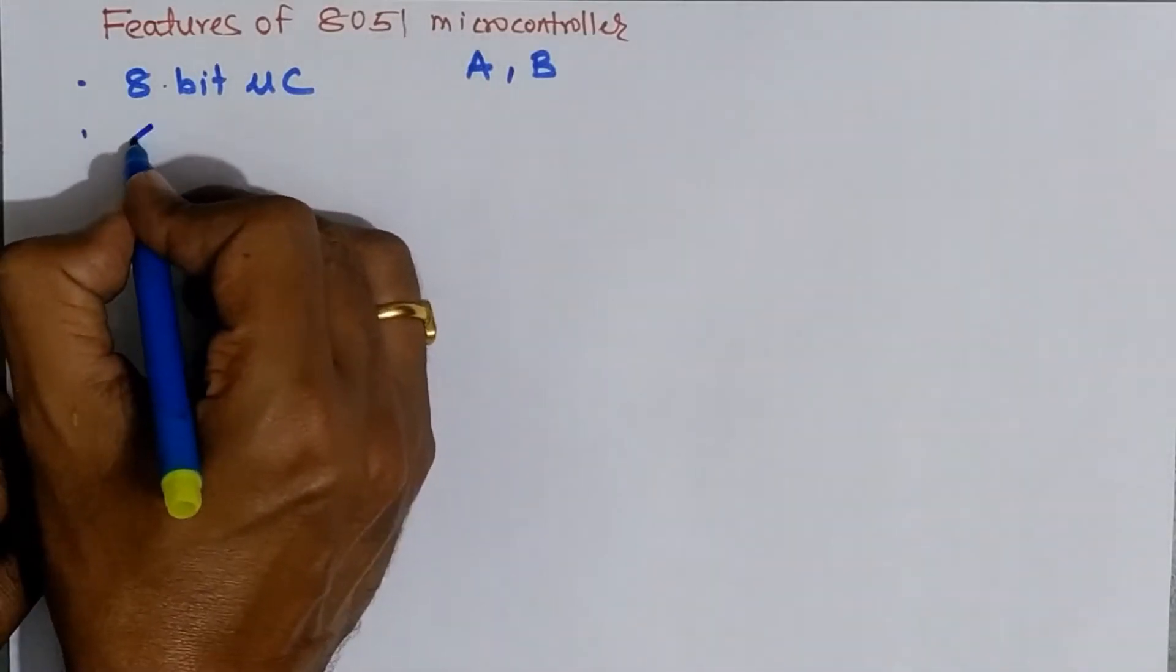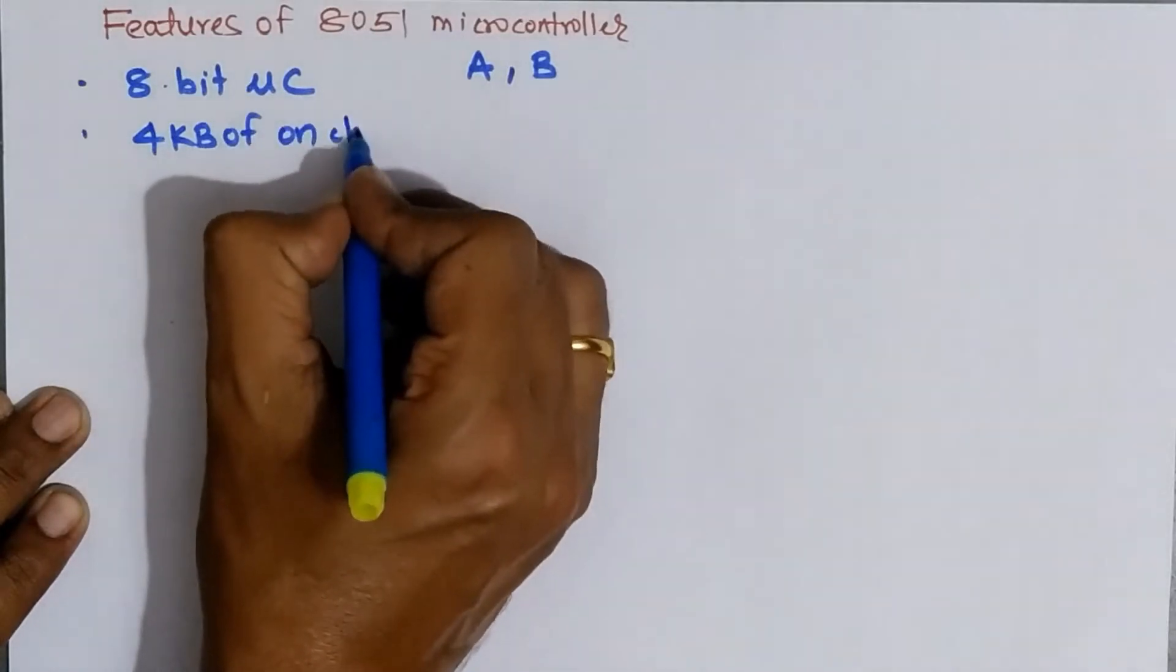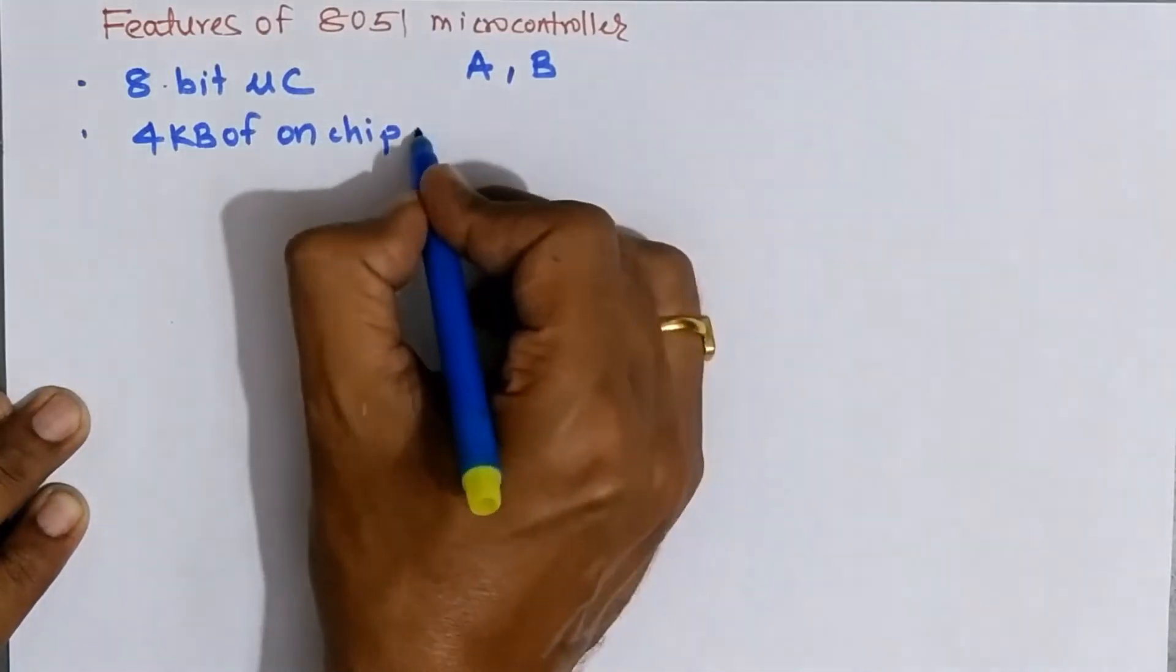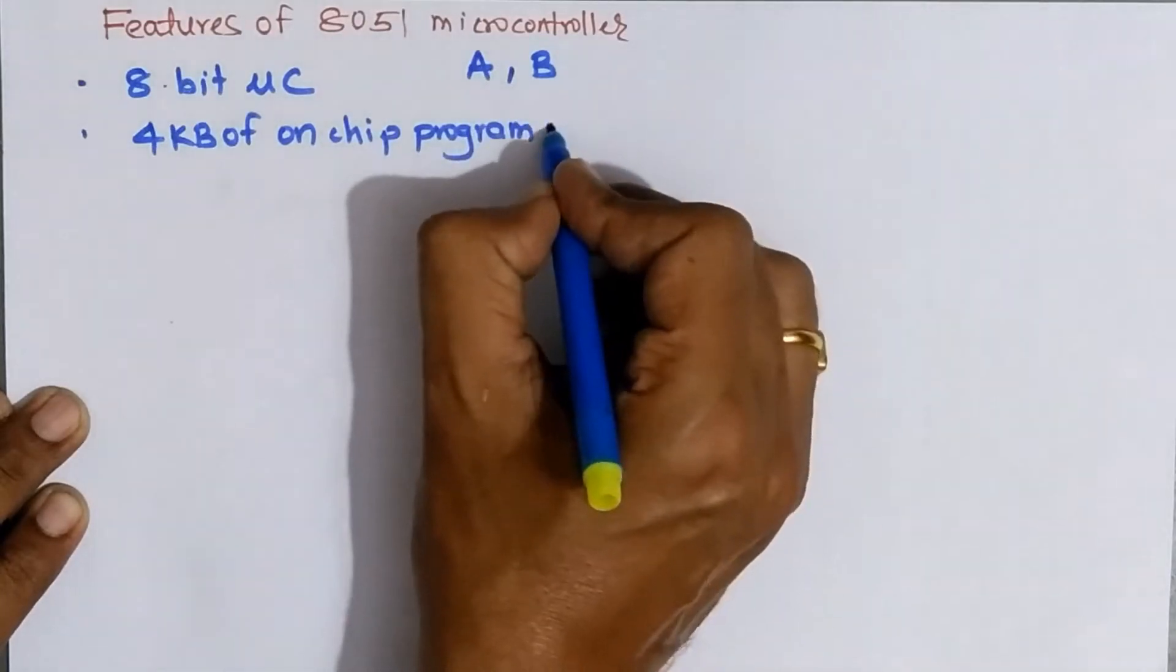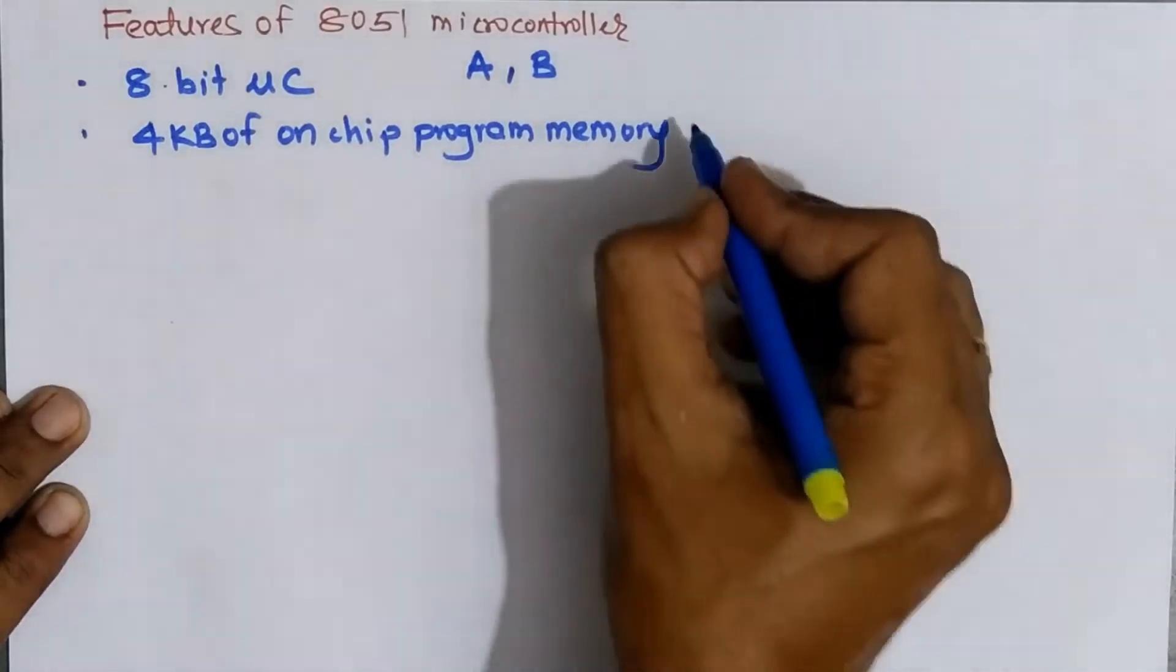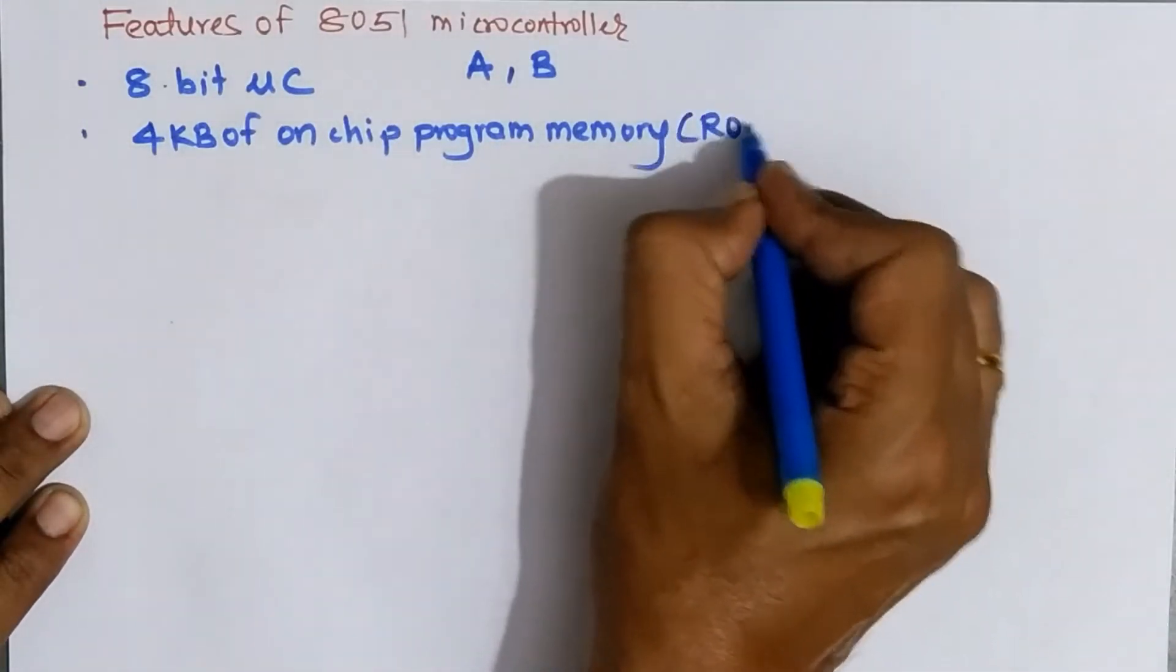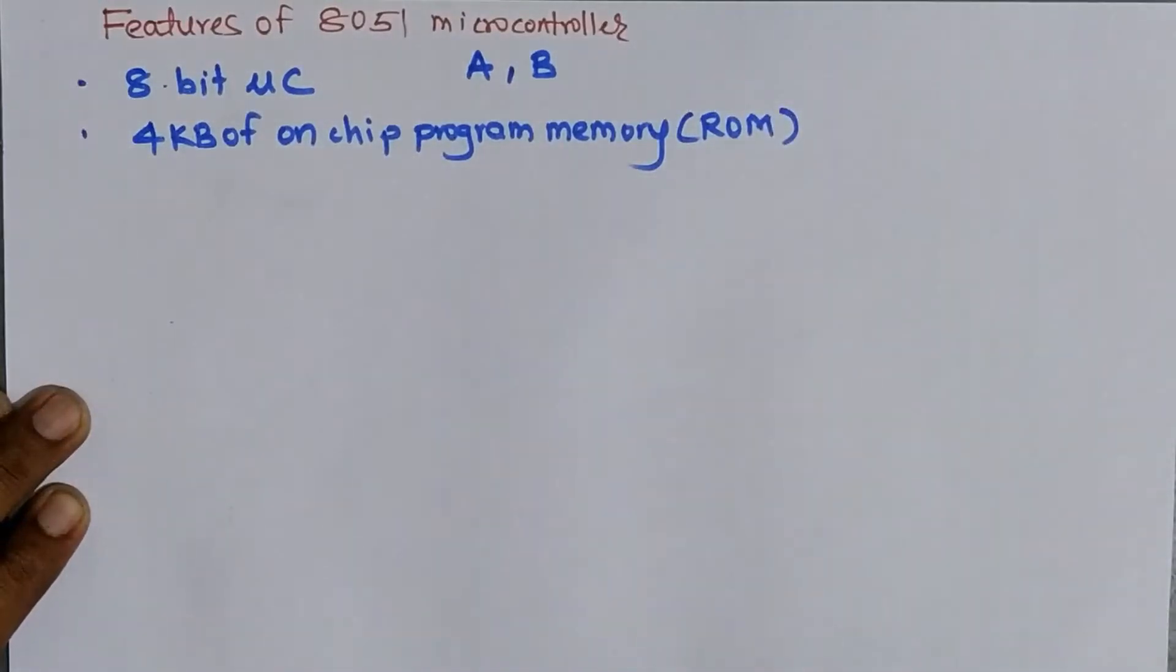The next feature of 8051 is it is having 4 kilobytes of on-chip program memory. This program memory is used to store the instructions written by the user. And generally, the ROM is used to store the instructions. Latest versions of microcontroller also has flash ROM.